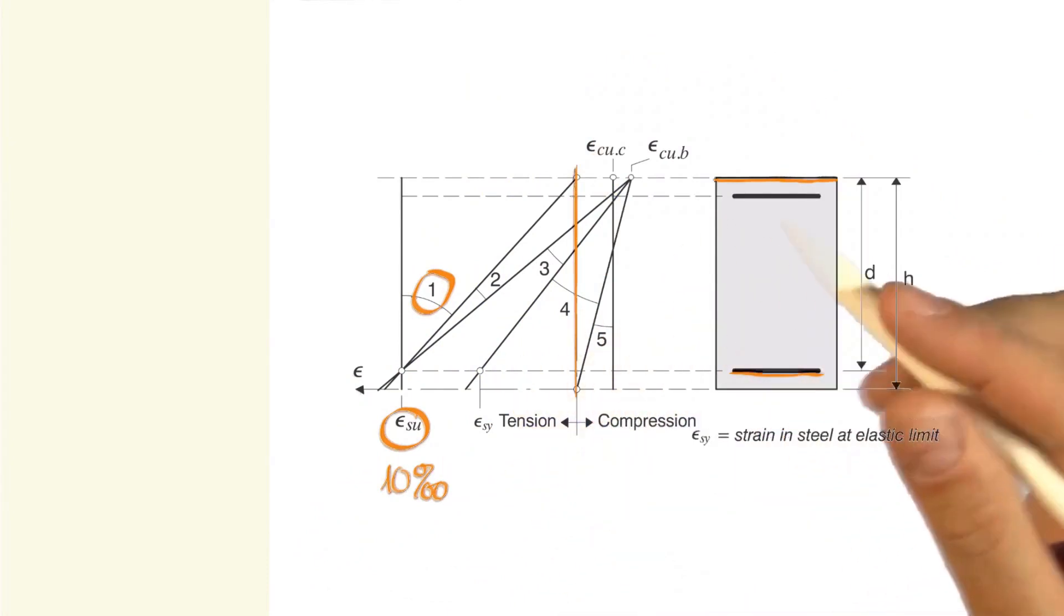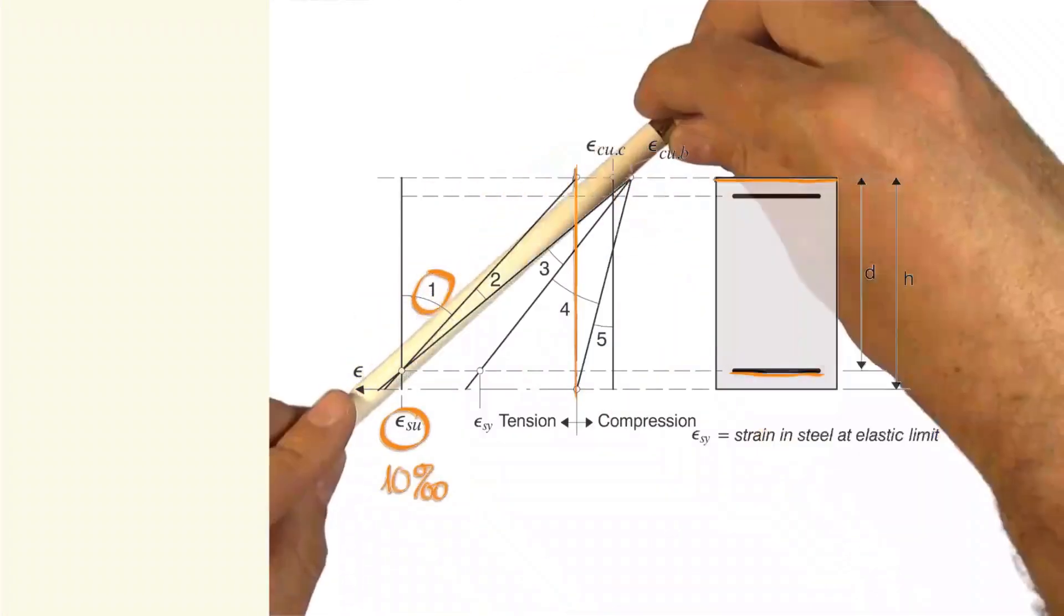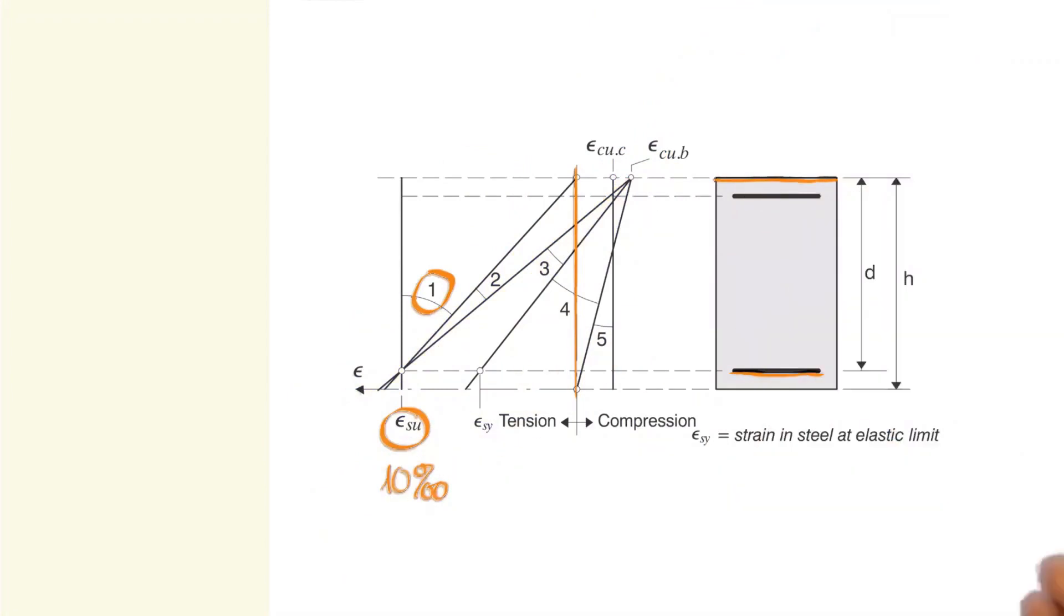From that moment and until the point where our concrete reaches its maximum compression resistance, we will be in region number 2.